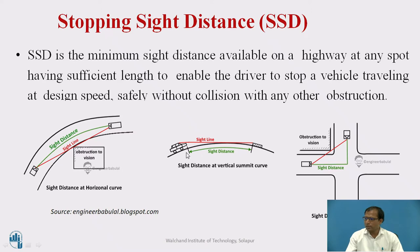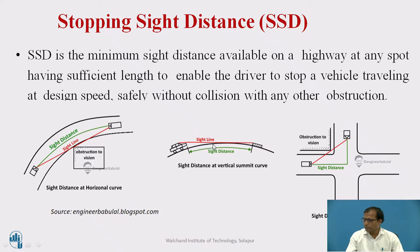Coming to the vertical curve, the vehicle which is coming on the summit curve should be able to see the opposite vehicle well in advance — or any object or pedestrian — well in advance. Because of the topography of this summit curve, if the topography is kept very vertical, the distance between the object and the driver will be very short, which again reduces the sight distance.